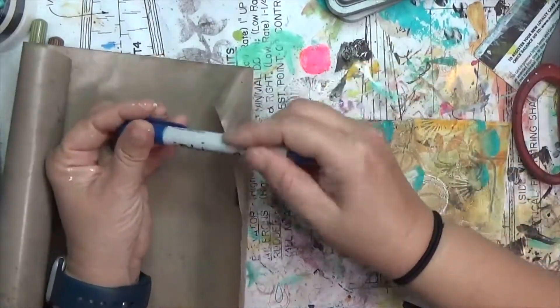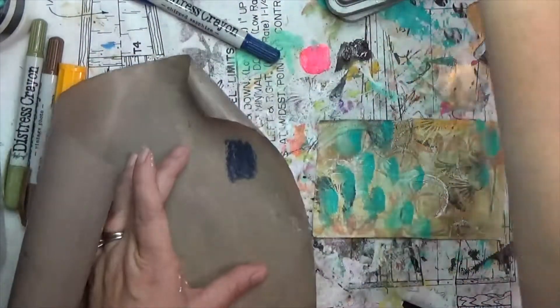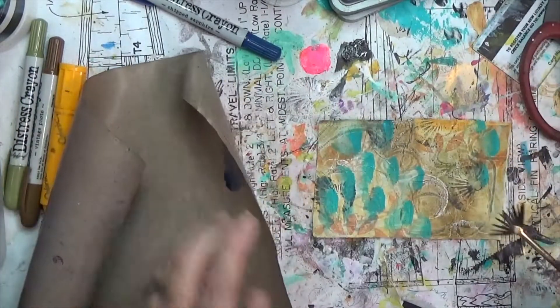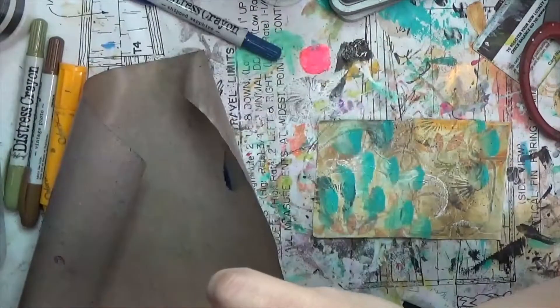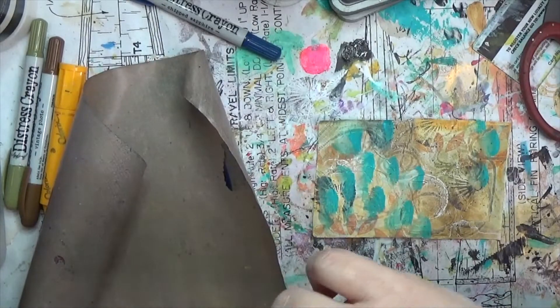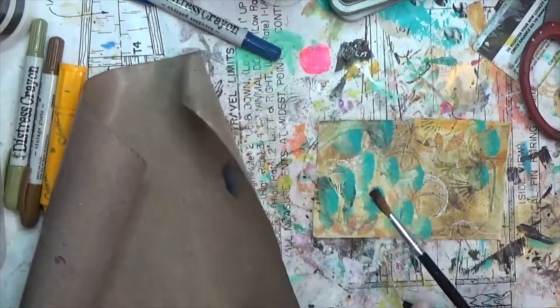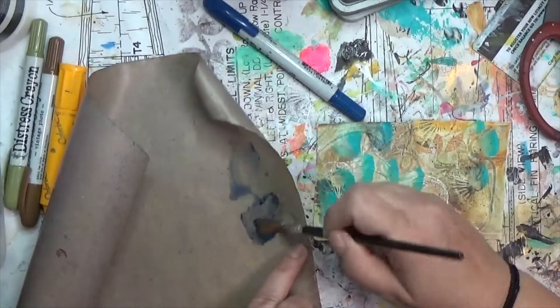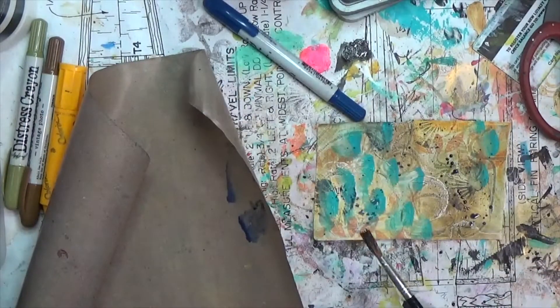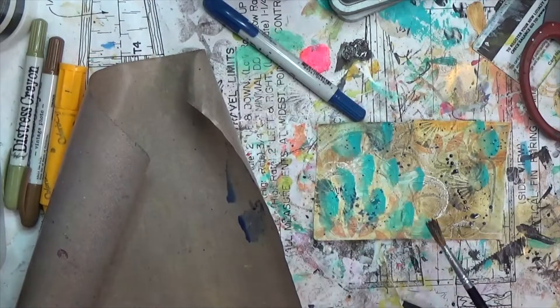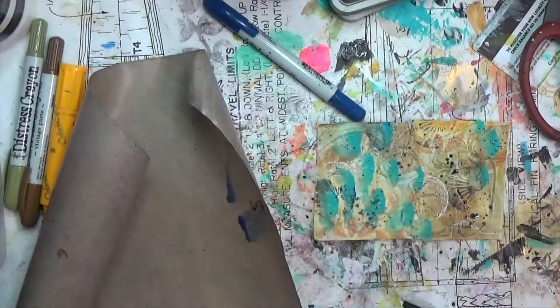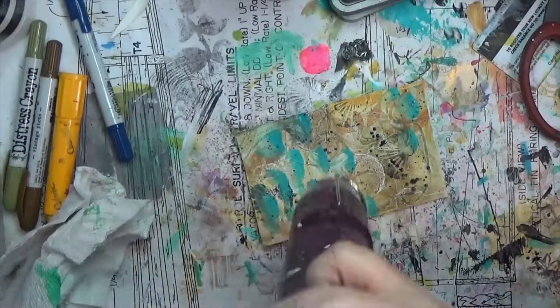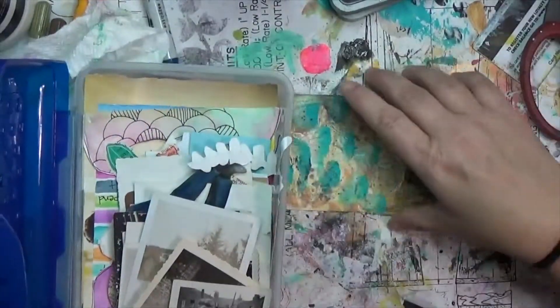So I blurred those, dried this real quick, and then I think this is Chipped Sapphire, which is another distress crayon, because I wanted some splatters. I wanted some dark splatters on here and I was thinking I wanted Payne's Gray but I was like you know what, I've got this Chipped Sapphire and I'm going to use it and it worked perfect. So my fan brush didn't give me the big blobs of splatter I wanted so I grabbed another paintbrush and did that and got just the splatter I wanted.